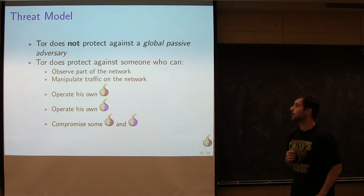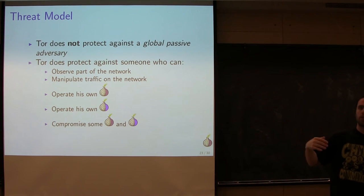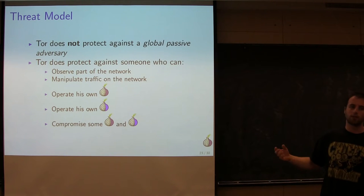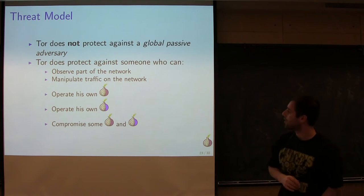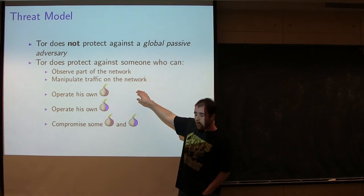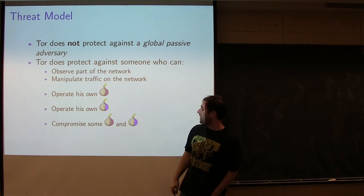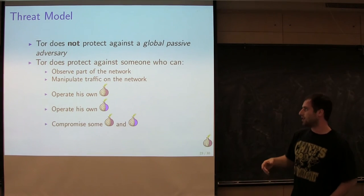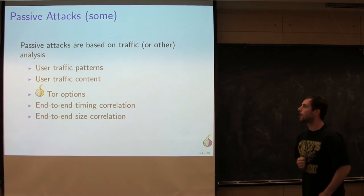Regarding the threat model of Tor: a global passive adversary is someone who can see the whole network, all input and output. Tor does not protect against this. If they can see source traffic and destination traffic, there are attacks that Tor just is not going to help with. But it's rare that somebody will actually have this kind of view of the network.